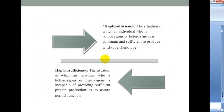There are two situations: haplosufficiency and haploinsufficiency. Haplosufficiency is a situation in which an individual who is homozygous or heterozygous is dominant and sufficient to produce the wild-type phenotype. But in haploinsufficiency, the situation is one in which an individual who is heterozygous or hemizygous is incapable of providing sufficient protein products to assure normal function.